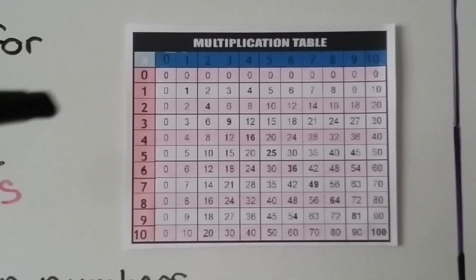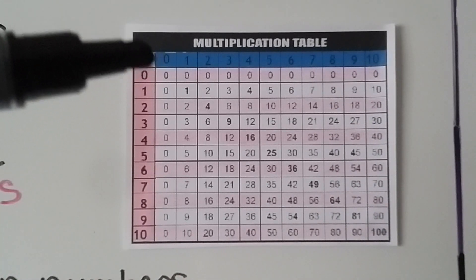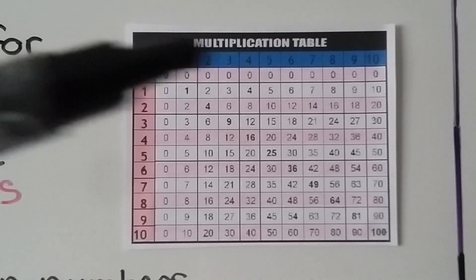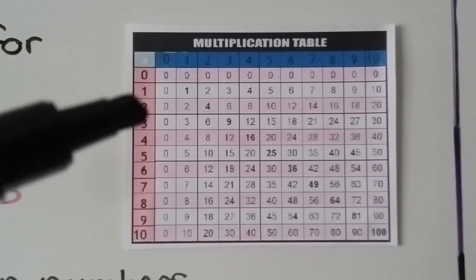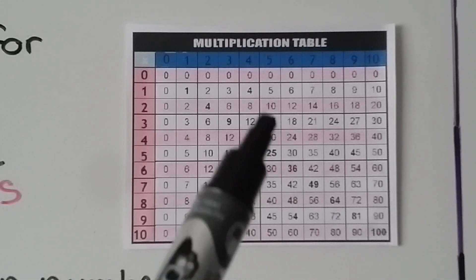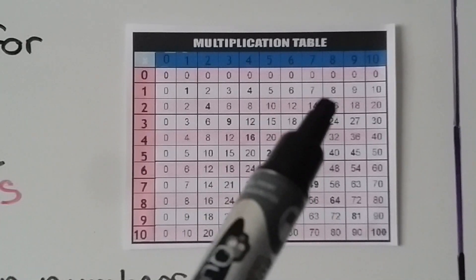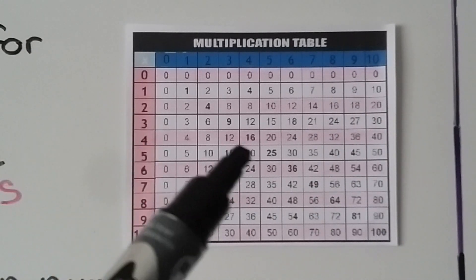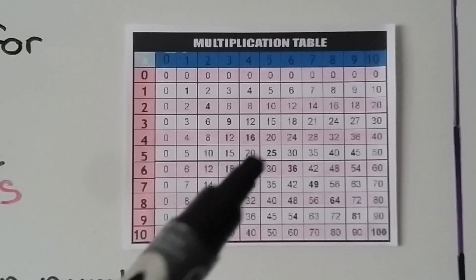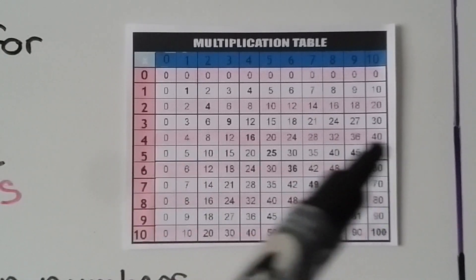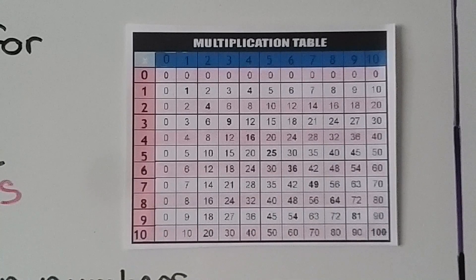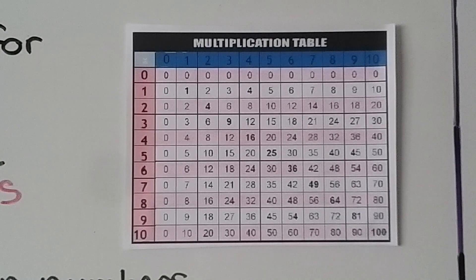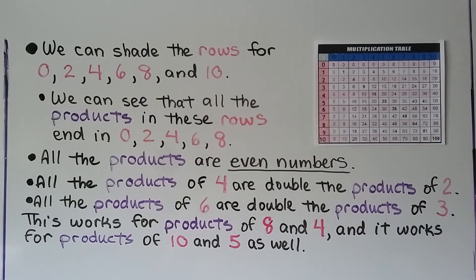Taking a closer look at the table, the products are going to end in 0, 2, 4, 6, or 8. For the 0s, they all end in 0. For the 2s, we have 0, 2, 4, 6, 8, then it cycles back — ending with 0, 2, 4, 6, or 8 again. For the 4s, we have endings of 0, 2, 4, 6, 8. The same goes for the 6s, 8s, and 10s. All the products are even numbers.